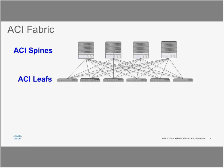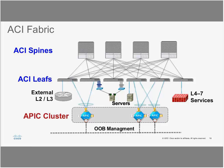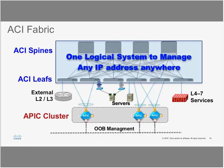That's where ACI comes in. In brief, ACI has spine and leaf switches based on Nexus 9000, managed by an APIC controller. Servers connect to the leaves where switching happens, and ACI leaves also support Layer 4 to Layer 7 services. Routing to the WAN or cloud is connected to the leaf or spine. It's a unified infrastructure that caters to different applications with the same policies no matter where your application resides in the network.